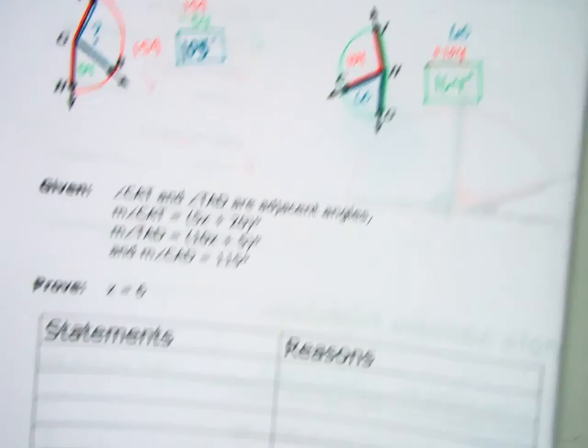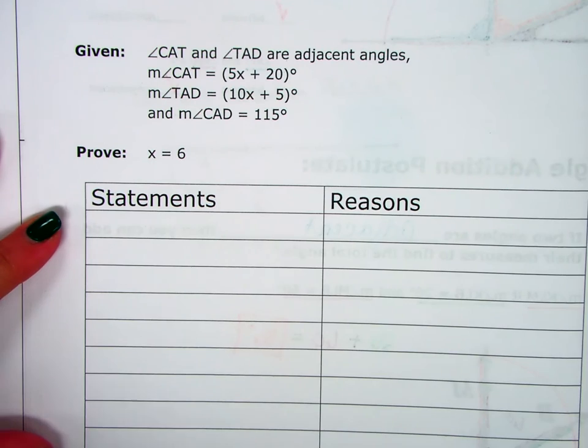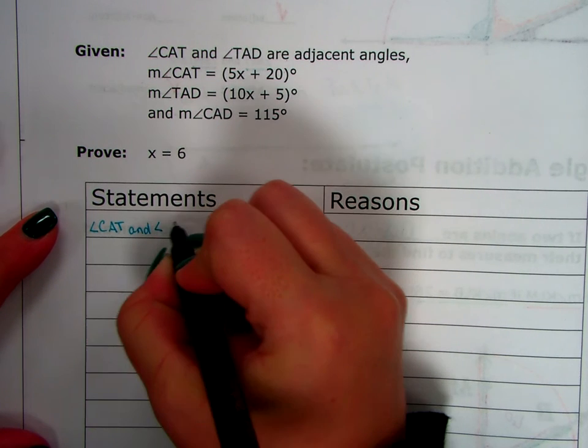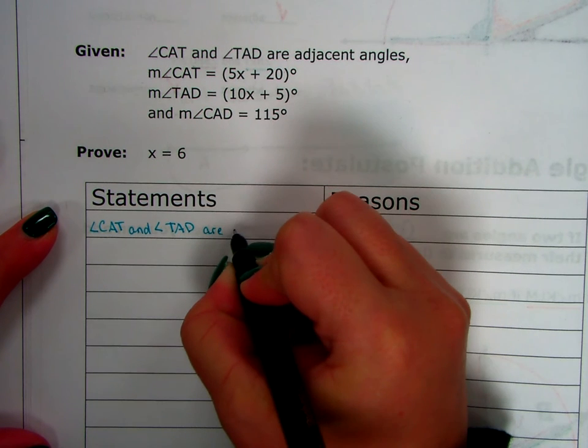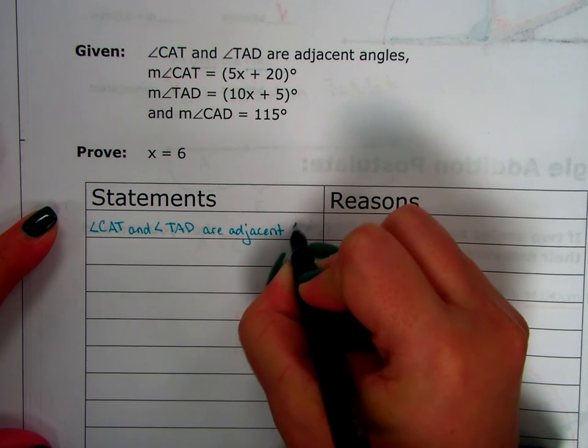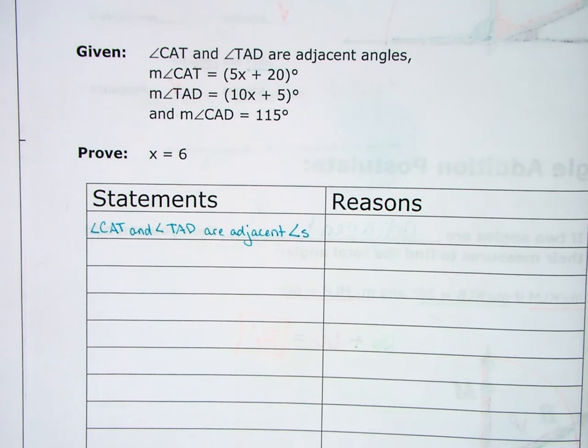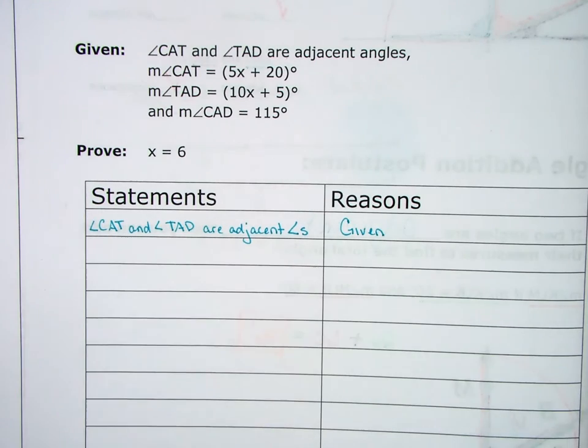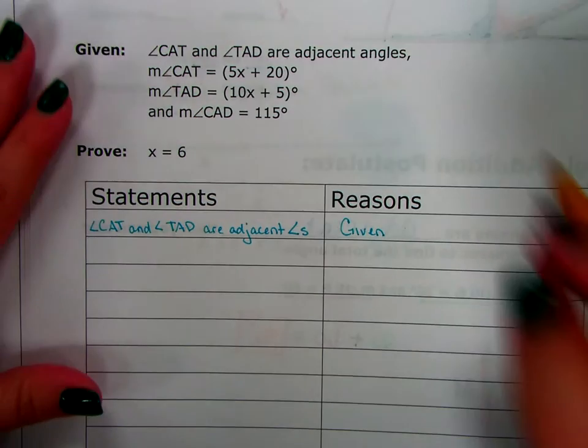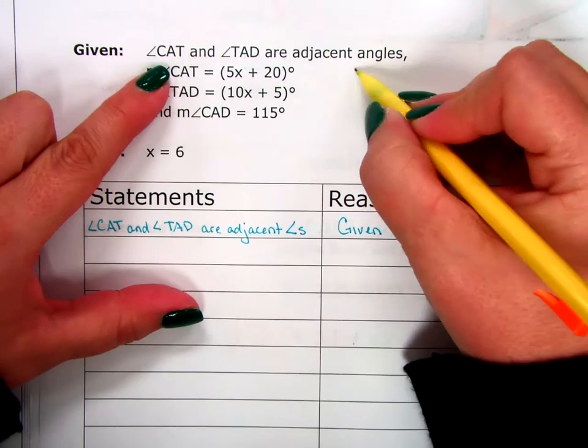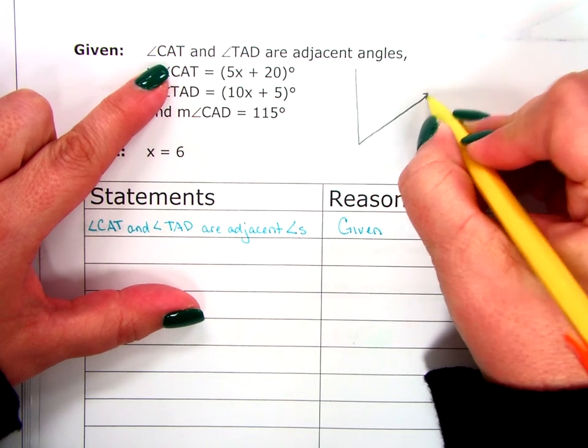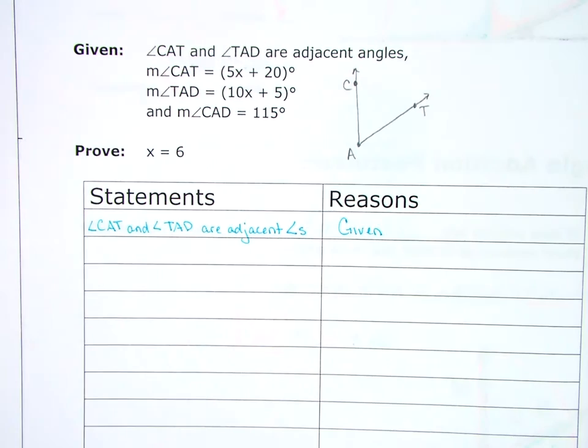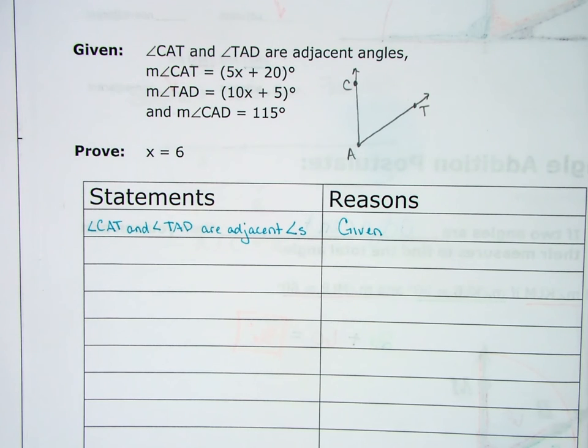Questions? Are we ready for a proof? I think we're ready. So, given angle C-A-T and angle T-A-D are adjacent angles. Angle C-A-T and angle T-A-D are adjacent angles. If you want to abbreviate angles with an angle symbol and an S, I will totally understand what you mean. And that was given to me. Now, what I like to do is I like to draw a picture as I go. So, when I write that given, I'm going to draw the picture. I know I've got angle C-A-T. So, I'm going to draw an angle. And I have no idea how big or small it is. But I'm going to label it as angle C-A-T.